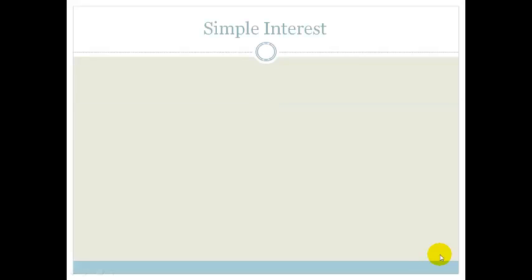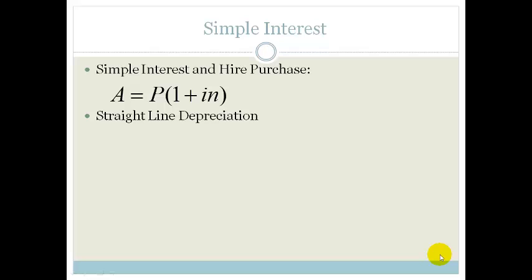Now, remember, your simple interest comes in two versions. The one is when we are increasing our value, and the other when we are decreasing our value. So, simple interest or hire purchase is given the formula A equals P times 1 plus IN, whereas if we are decreasing in value, we have a straight-line depreciation, in which case A equals P times 1 minus IN.